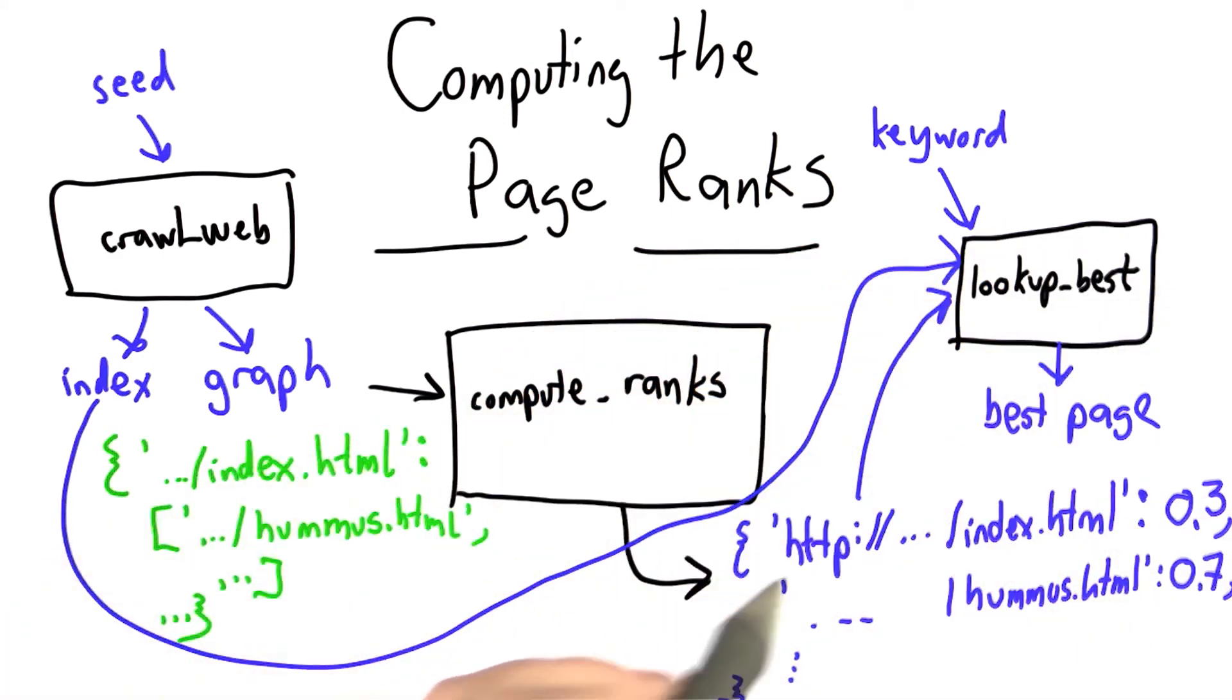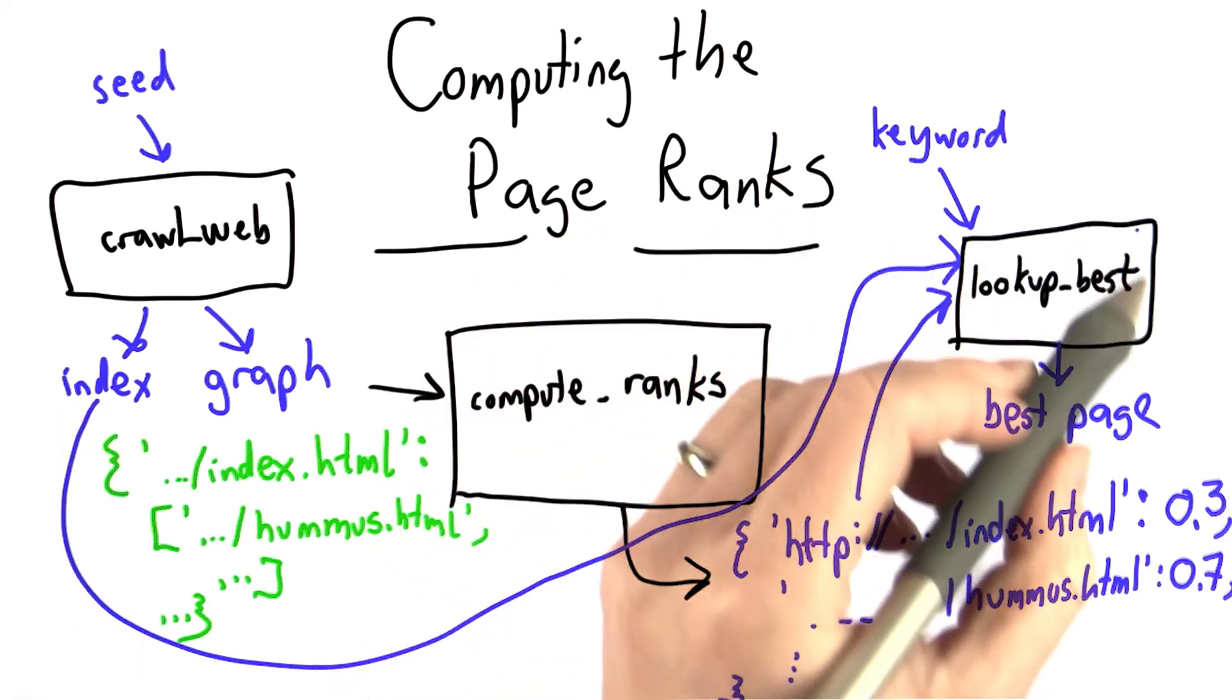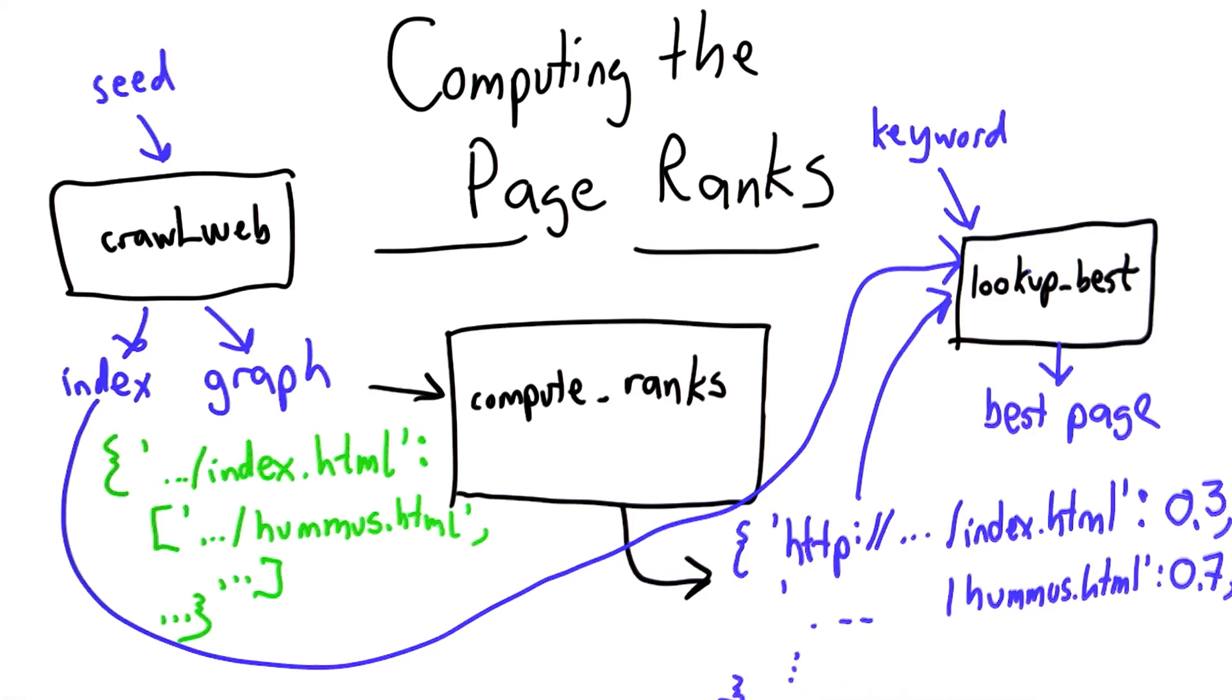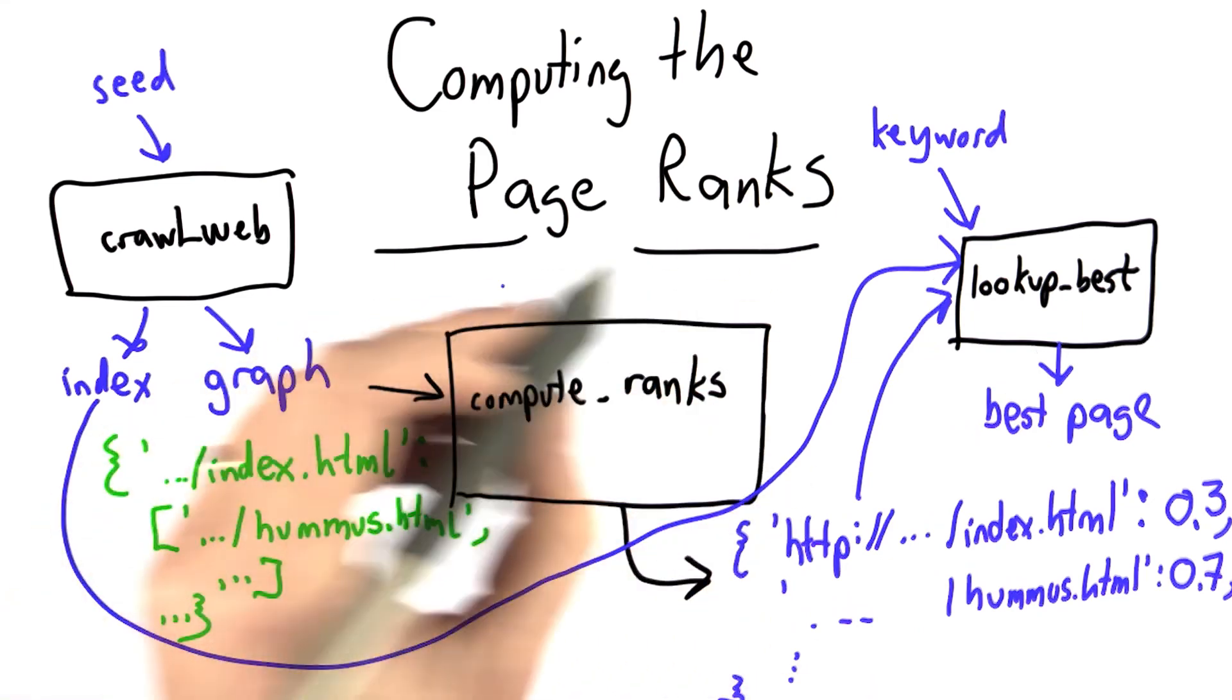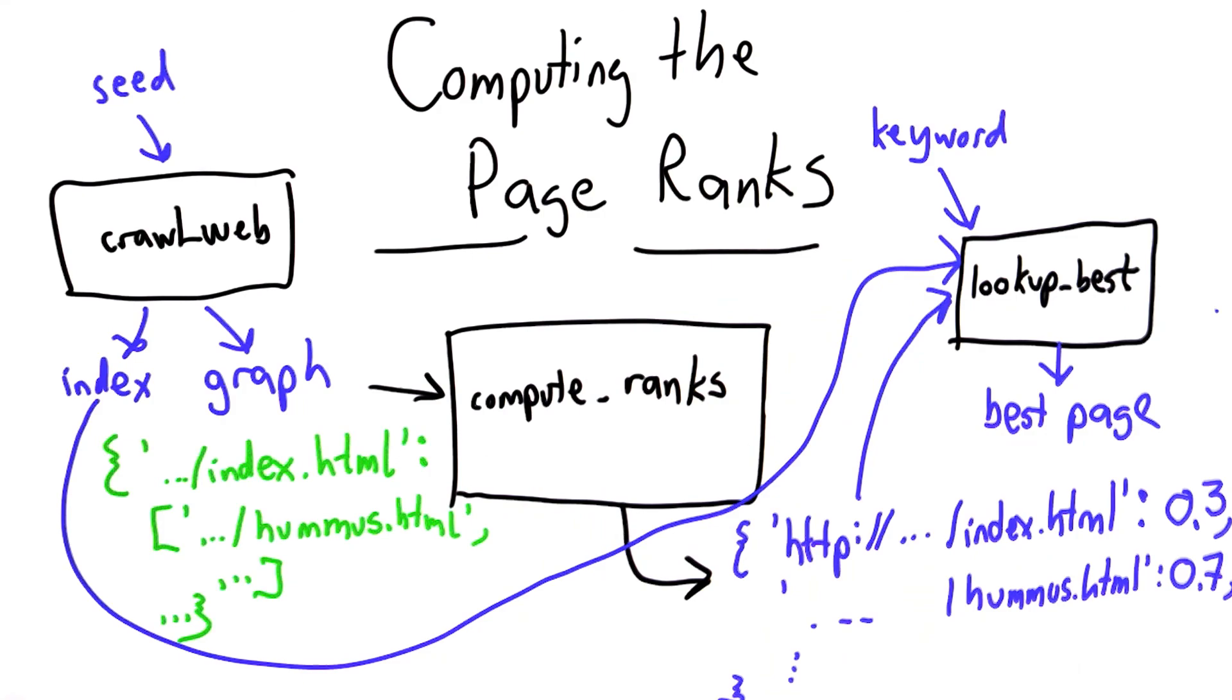Then lookup_best takes the graph as input, the index as input, and the keyword, finds the pages that contain that keyword, and identifies the one that's best using the ranks. That's what you'll have after the homework of this unit. We're going to finish compute_ranks now and leave it up to you to define lookup_best as a homework question.